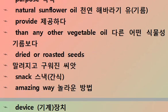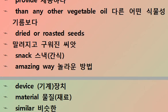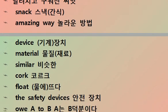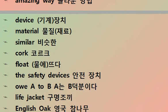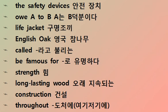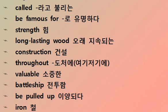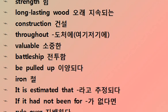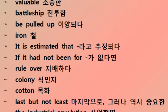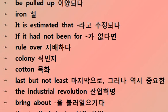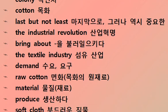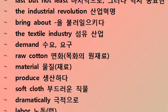An amazing device made of material similar to cork could float — the safety device, a way to be a life jacket. The English oak was famous for its strength and long-lasting wood, used in construction throughout history. Valuable battleships were built from it. It is estimated that if it had not been for English oak, rule over the colonies might have differed.